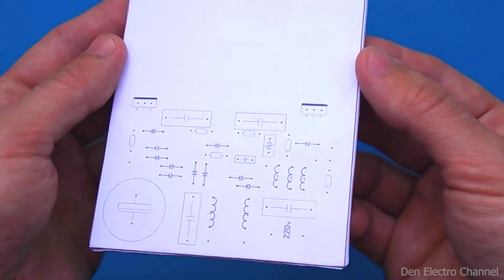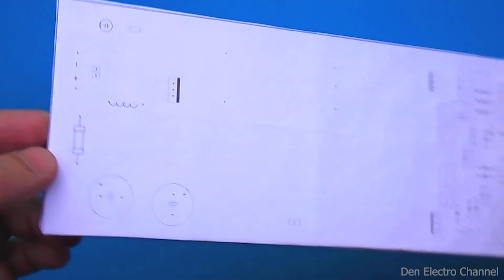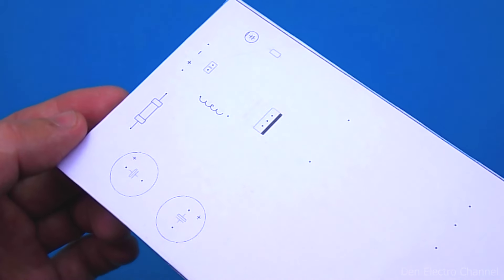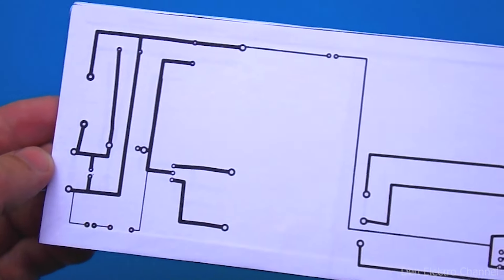This is where the high voltage side is located, a transformer will be installed in the middle. And this is the low voltage side. This is the first version of the board layout. In the second version, I will fix some things.